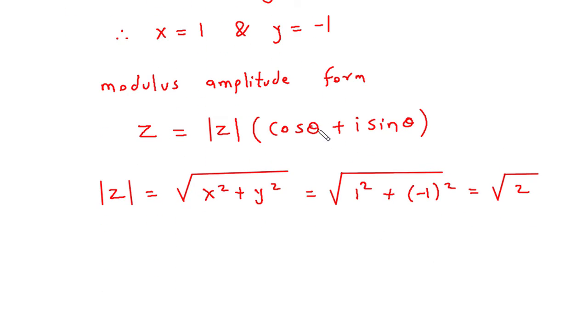Next we have to find the value of theta. The formula is tan inverse of y by x. So this will be tan inverse of y by x. y is minus 1 divided by x which is 1. So this will be minus pi by 4. Tan inverse of minus 1 is minus pi by 4.